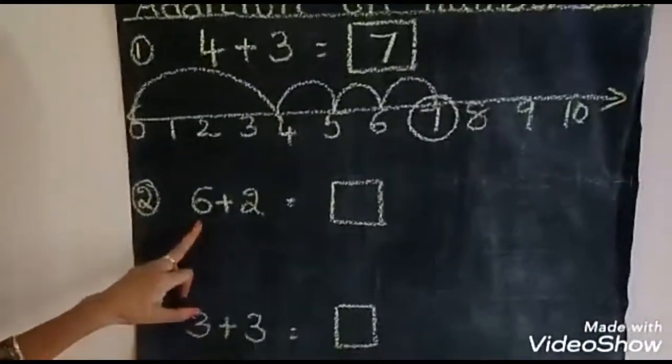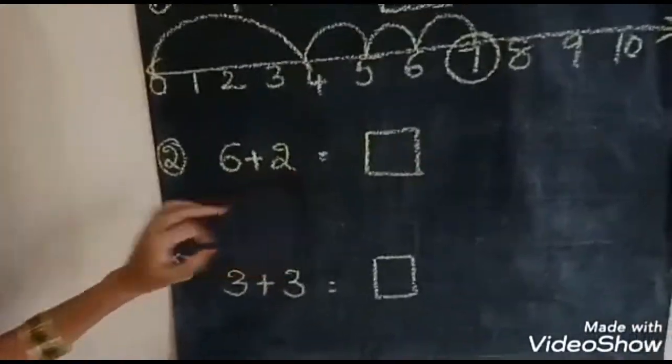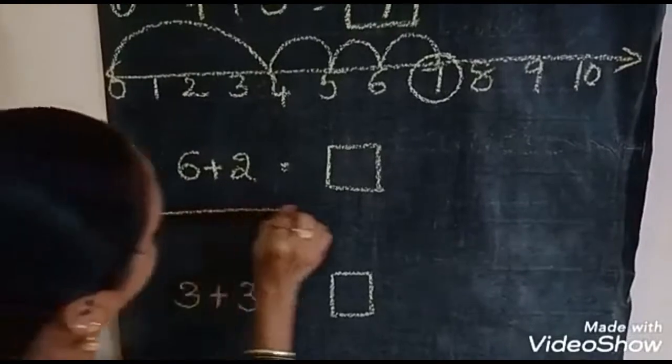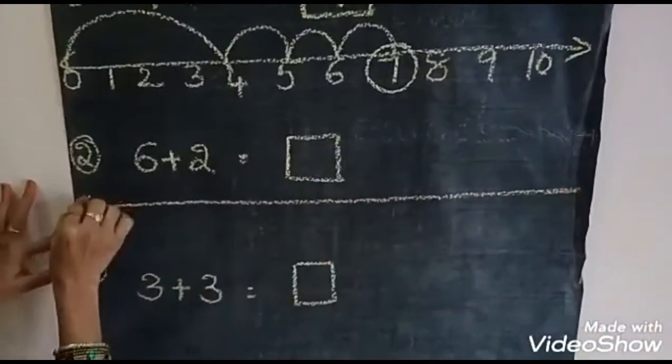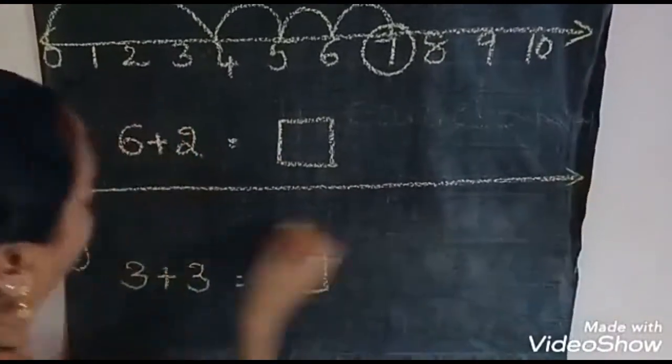Next. Here, 6 plus 2. Again, draw one scale like this. 0 to 10. Look at here. Auto drawing.